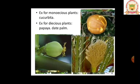An example of a monoecious or homothalic plant is Cucurbita. Examples of dioecious plants are papaya and date palm, as they contain either male or female reproductive parts.